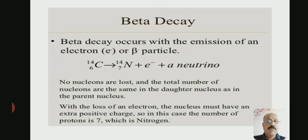With loss of an electron, the nucleus must have an extra positive charge. In this case, the number of protons is 7, which is nitrogen.